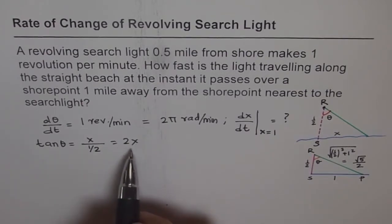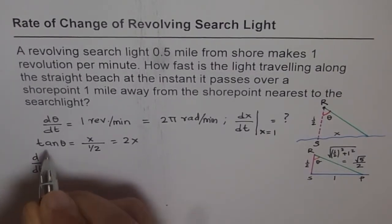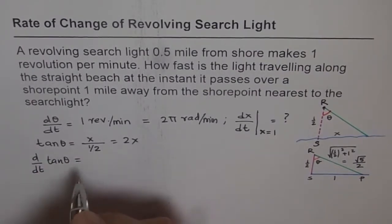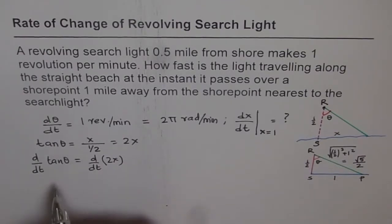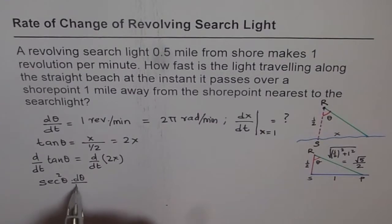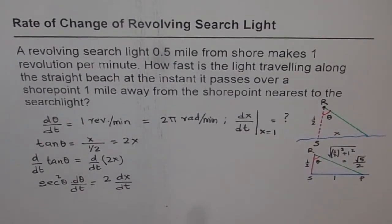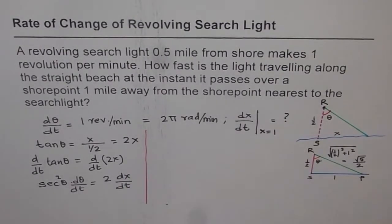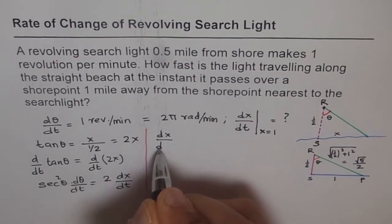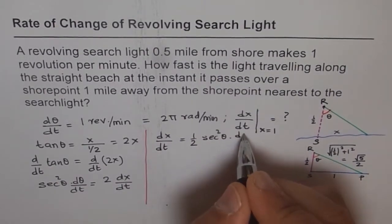Now, if we differentiate both sides with respect to time, the derivative of tan θ gives sec²θ · dθ/dt on the left side, and the right side gives 2 · dx/dt. So we get: sec²θ · dθ/dt = 2 · dx/dt. Rearranging, dx/dt = (1/2) · sec²θ · dθ/dt.